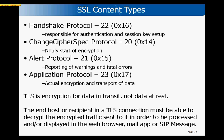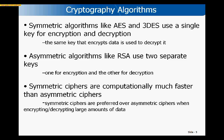TLS is used for encrypting data transported across the network over a TCP connection. The host or recipient in that TLS connection must be able to decrypt the encrypted traffic sent to it in order to process and display the appropriate information in the web browser, mail application, or SIP message. There are really two types of cryptography algorithms: symmetric algorithms and asymmetric algorithms. Symmetric algorithms like AES and Triple DES use a single key for both encryption and decryption.